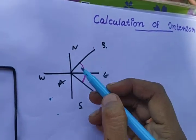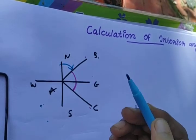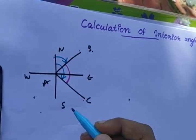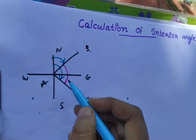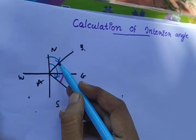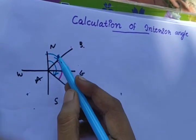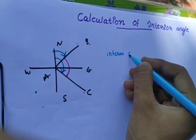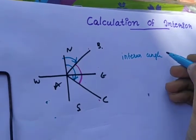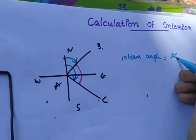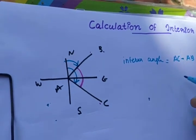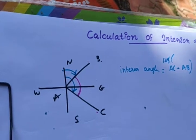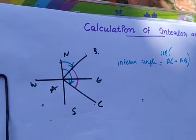Let's see: we have a line A-B and A-C. This line is closed at A-C and A-B. We put a bearing at A and B, but there is no bearing at A-C. So what is the formula? The formula is: bearing of AC minus bearing of AB. What is the back bearing of AC minus AB? It is the superior angle.